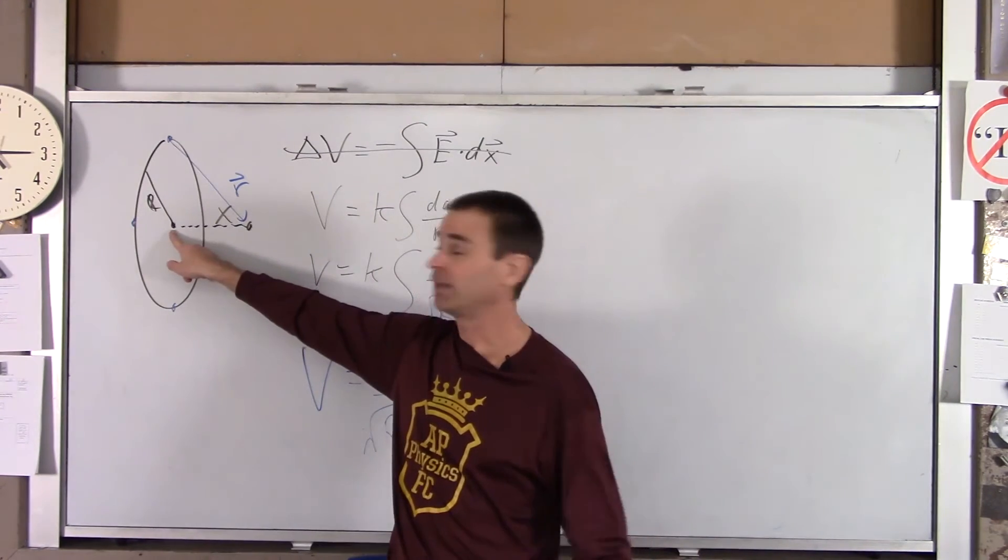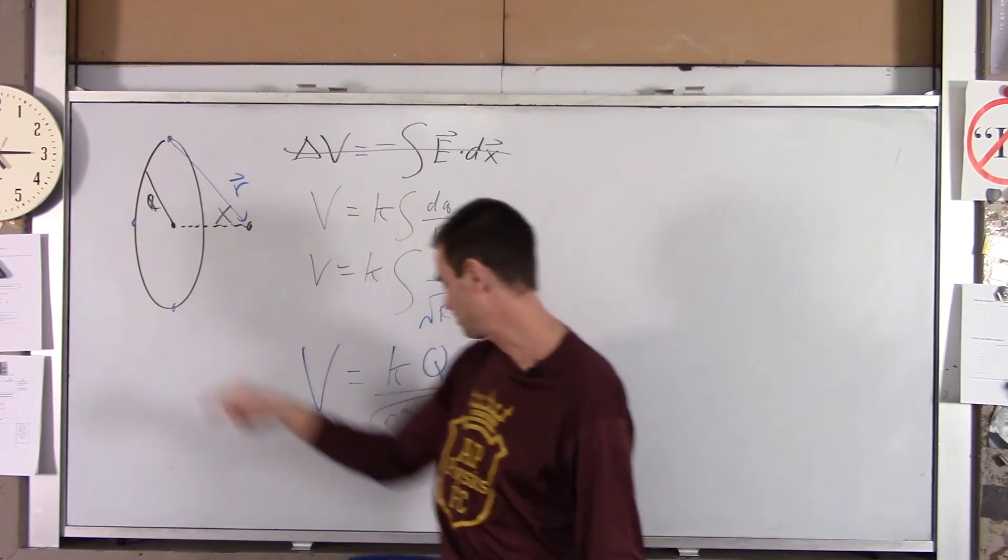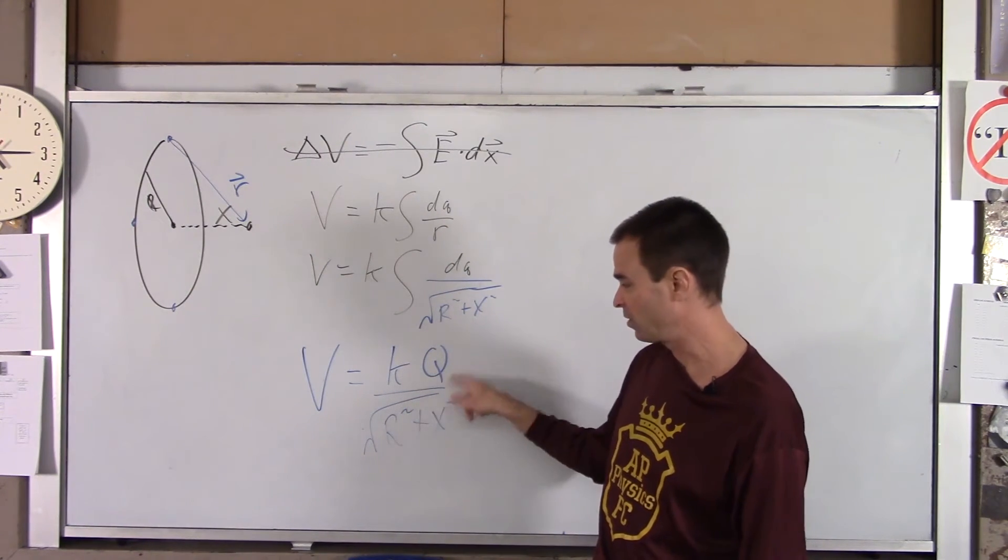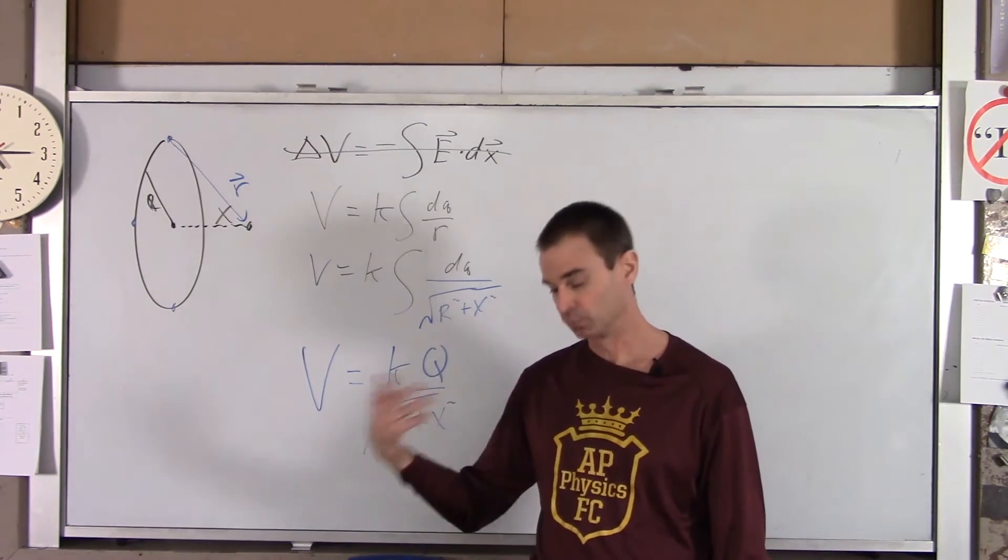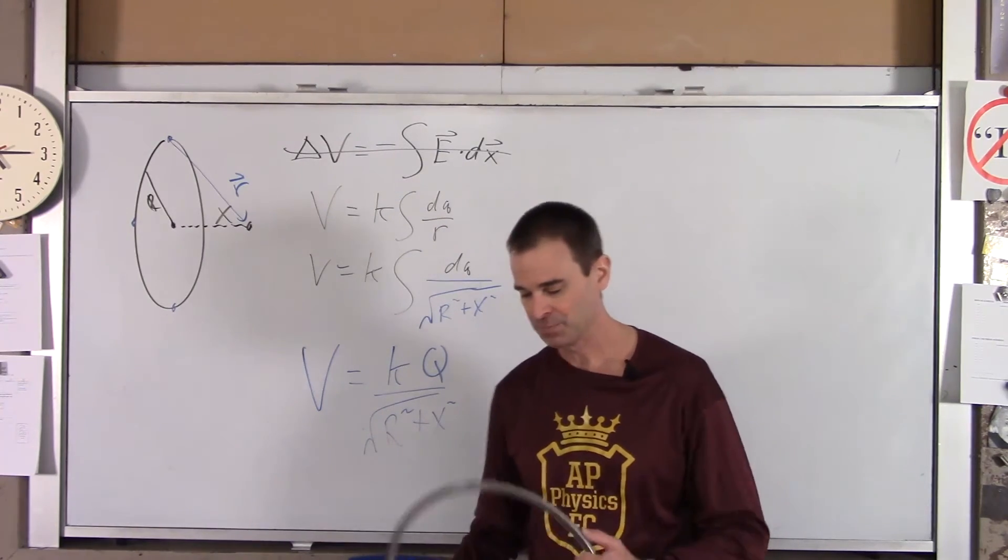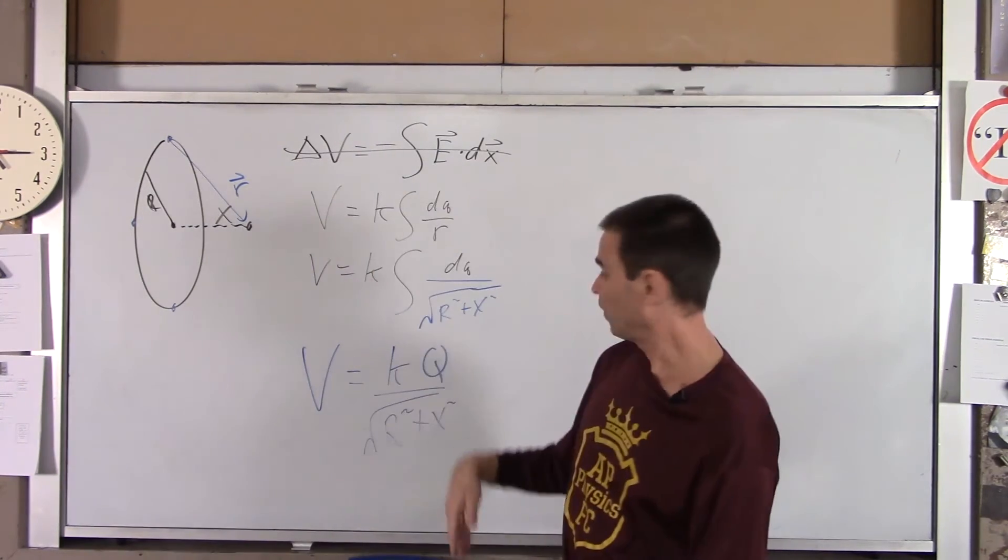If you're dead center of the ring, in other words, if you make X zero, what happens? Well, if you make X zero here, you get a voltage as KQ over big R. You got root big R squared, which just becomes big R. So, there's your voltage.